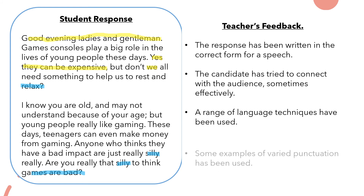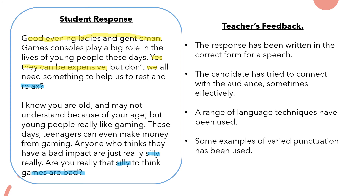Some examples of varied punctuation have been used. A semicolon has been used in the second paragraph — traditionally quite difficult to use. You can use a semicolon when you've got two separate clauses that are linked. In this case: 'I know you are old and may not understand because of your age; but young people really like gaming' — it's linking two separate ideas, talking about the parents' age and the passion that young people have for gaming as a hobby.